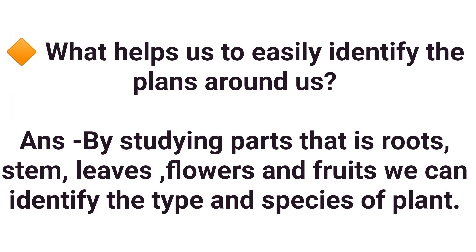What helps us to easily identify the plants around us? By studying the parts — i.e. roots, stem, leaves, flowers and fruits — we can identify the types and species of plants.